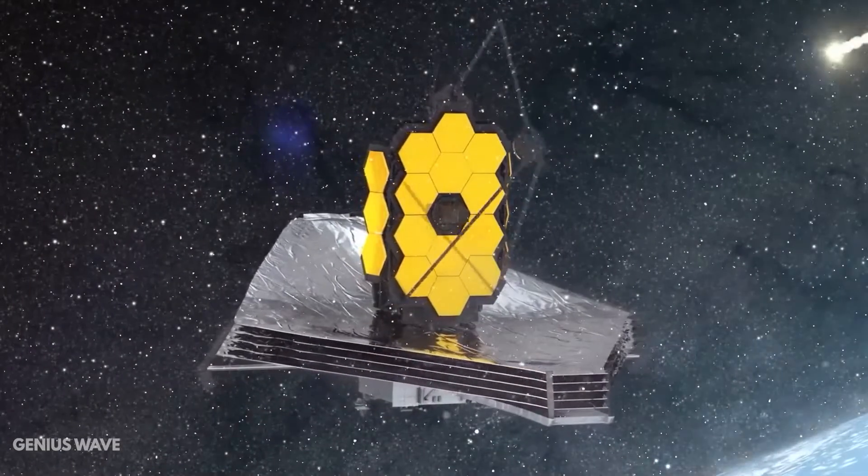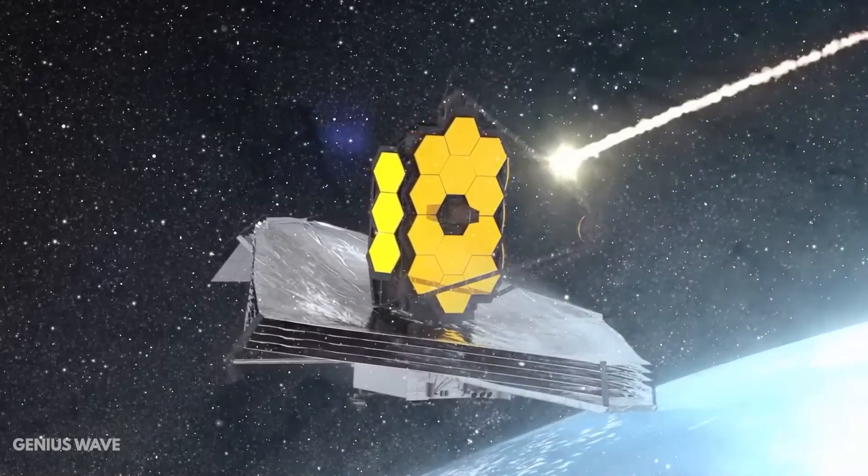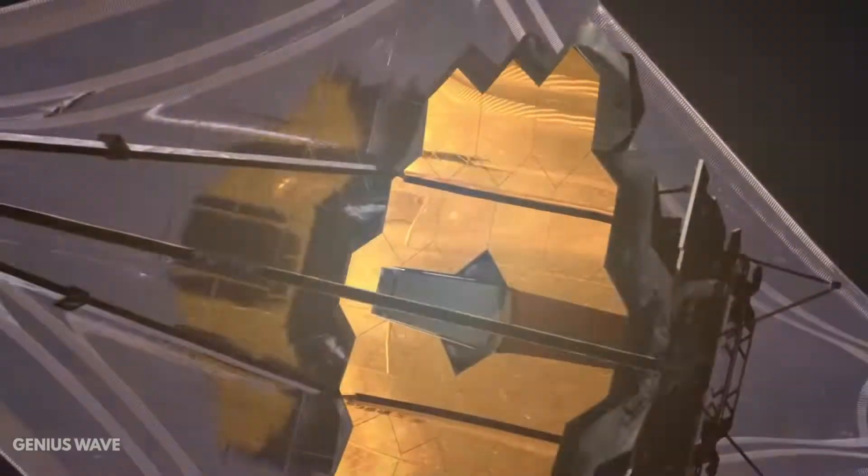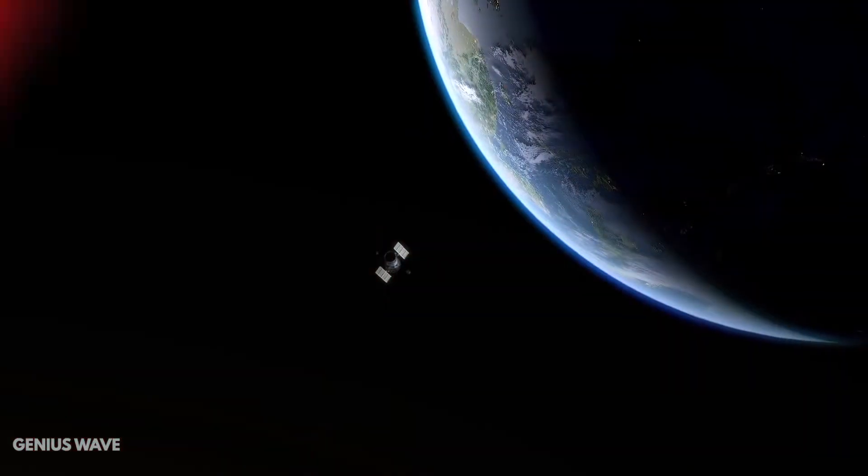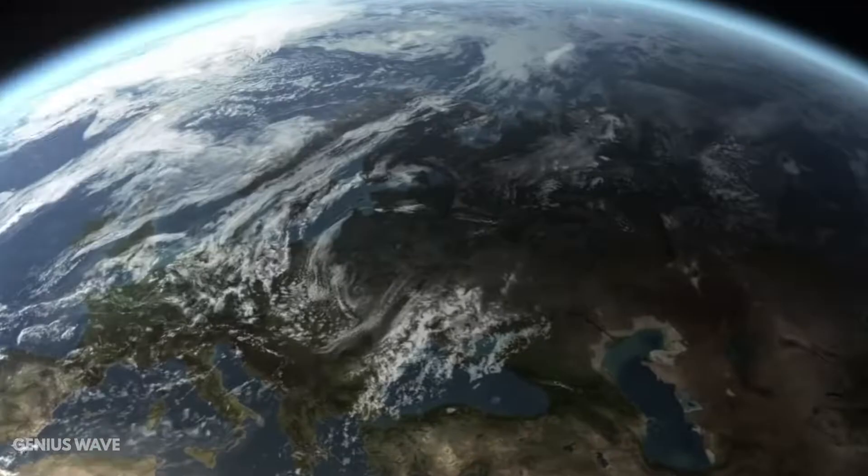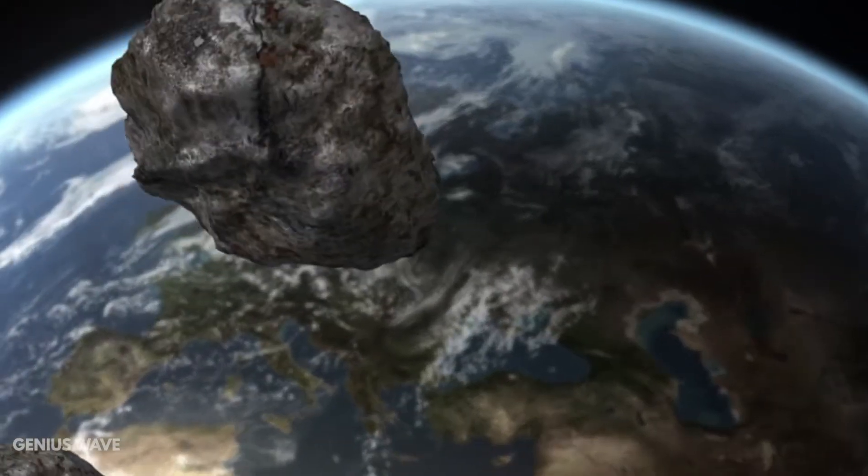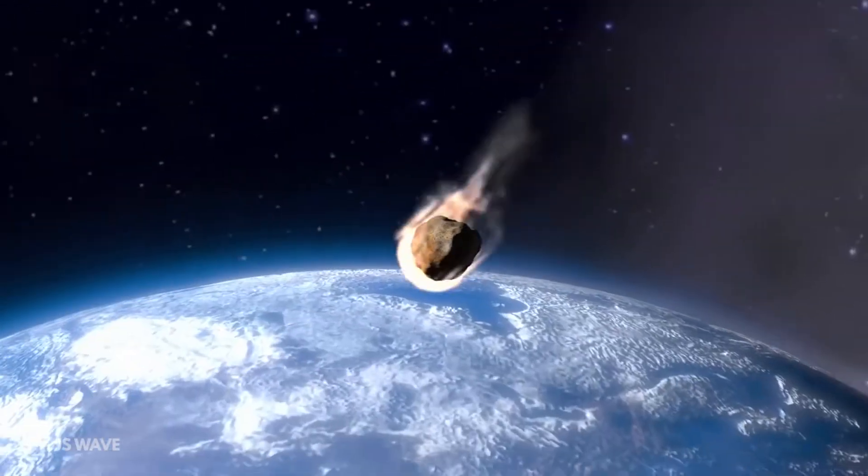So what happens next? Stick around till the end of the video as we will reveal all the occurrences that surrounded this event and what the next step is. Millions of micrometeoroids hit the Earth every day but they burn up in the atmosphere before they touch the ground, so they don't do any damage to us.